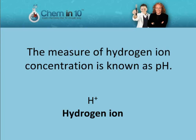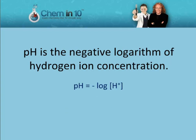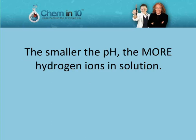The measure of hydrogen ion concentration is known as pH. pH is the negative logarithm of hydrogen ion concentration. The smaller the pH, the more hydrogen ions in solution.